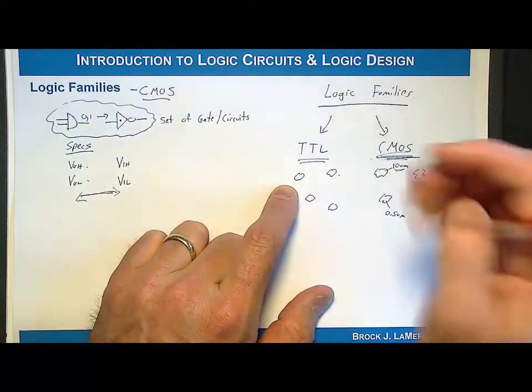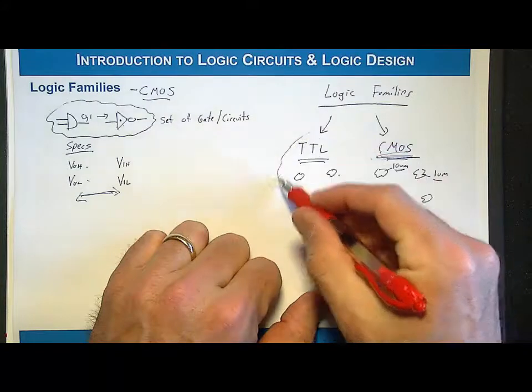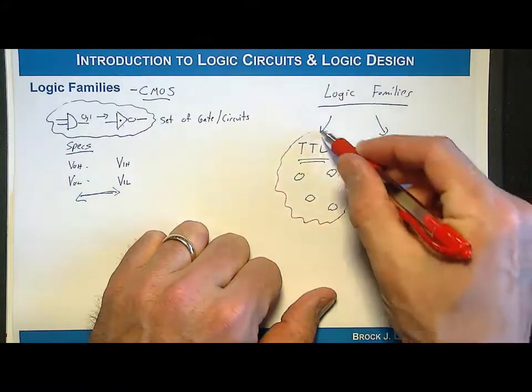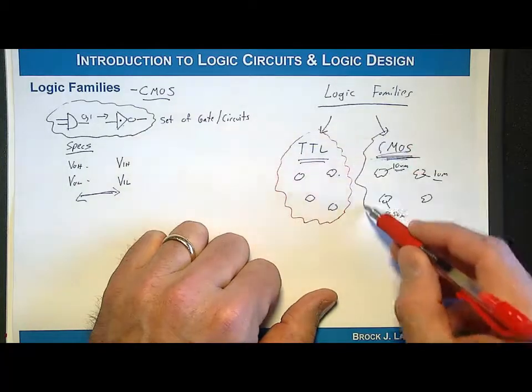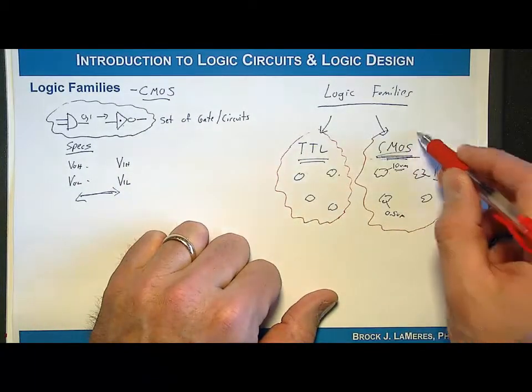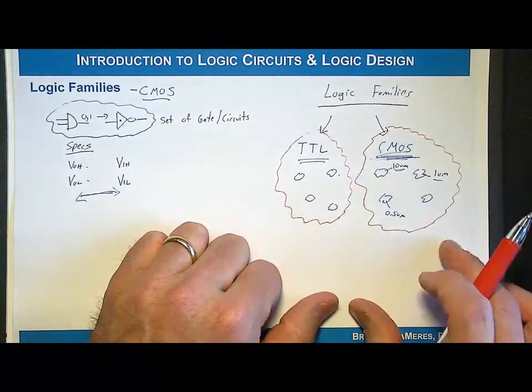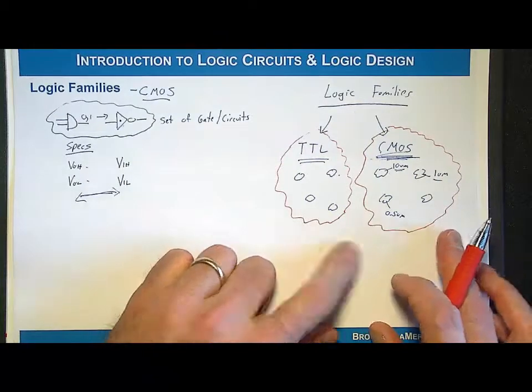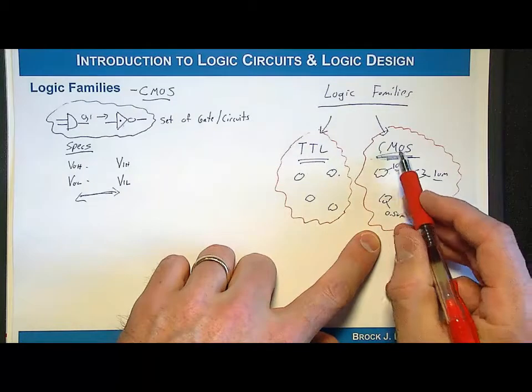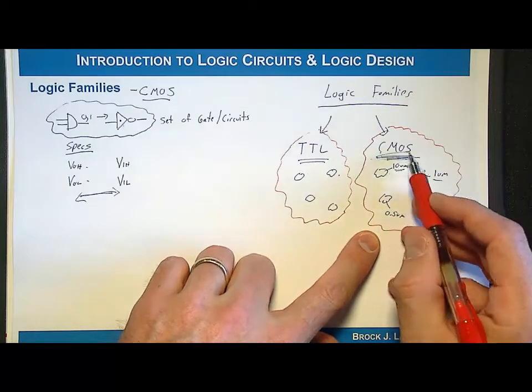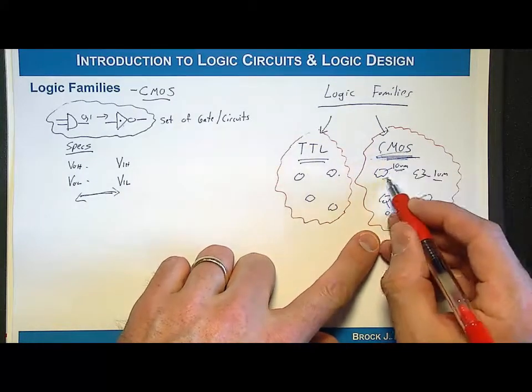TTL represents an approach to make these basic gates using a certain type of transistor, and CMOS represents a different approach to making these basic gates with a type of transistor. When we talk about CMOS, that's a general class, and we continue to dive down deeper by saying we have CMOS and it's a certain type of transistor.